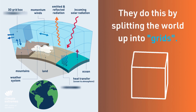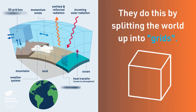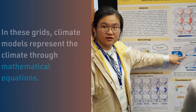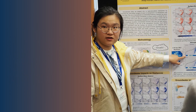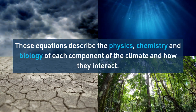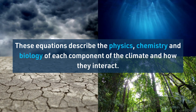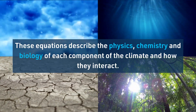They do this by splitting the world up into grids. In these grids, climate models represent the climate through mathematical equations. These equations describe the physics, chemistry and biology of each component of the climate and how they interact.